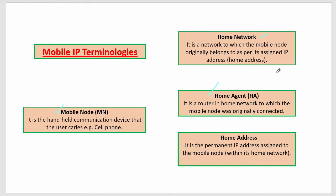The difference between home network and home agent: home network is where the mobile originally belongs, and home agent is where it is originally connected. For example, if India is the home network, Maharashtra is the home agent, and Pune is the mobile node.